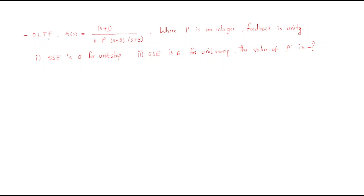The next problem: the open-loop transfer function G(s) equals (s+1) divided by s times P times (s+2) times (s+3), where P is an unknown integer and feedback is unity. Two conditions are given: SSE equals 0 for unit step, and SSE equals 6 for unit ramp. Find the value of P.